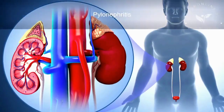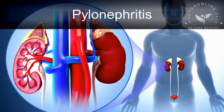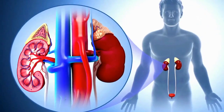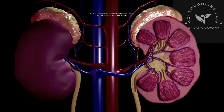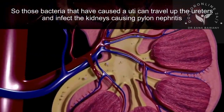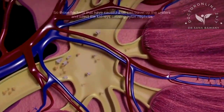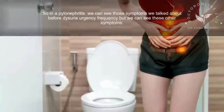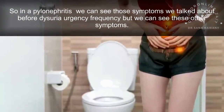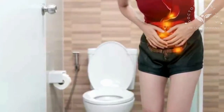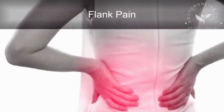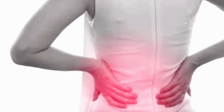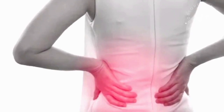The next signs and symptoms are caused by pyelonephritis, which is a complication of a UTI where the infection has ascended to infect the kidneys. Those bacteria that caused the UTI can travel up the ureters and infect the kidneys. In pyelonephritis, we can still see dysuria, urgency, and frequency, plus additional symptoms such as flank pain — pain at the lower side of the back at the bottom of the rib cage, where the kidneys are located.